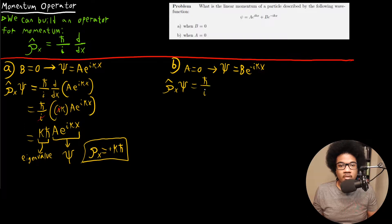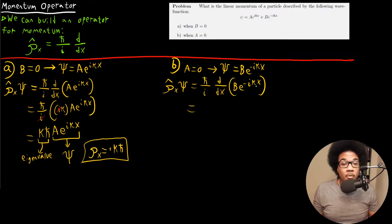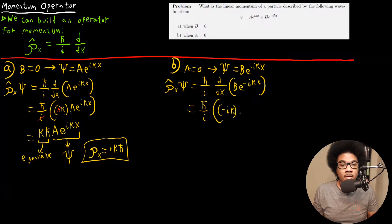We're going to have h bar over i d/dx, and we're going to be applying it to B e^(-ikx). So again, we take the derivative here. H bar over i comes down, and we end up with negative ik out front. And we got B e^(-ikx).